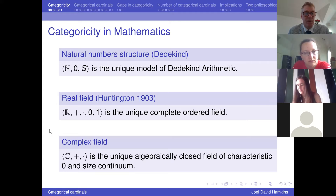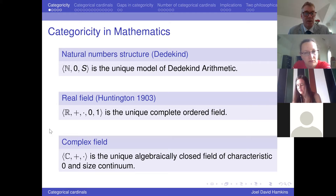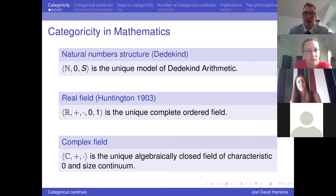The complex field is the unique algebraically closed field of characteristic zero having size continuum — that's a categorical characterization of the complex field. You could also say the complex field is the unique algebraic closure of the real field. So we have these categorical characterizations of many of our fundamental mathematical structures.